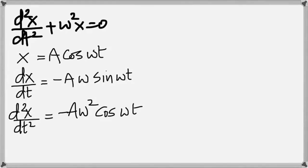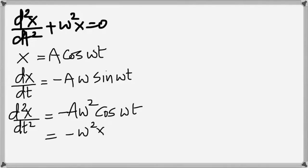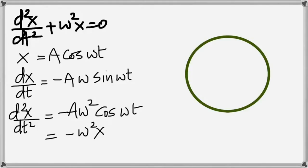Do you see A cos(ωt) in that result? That's nothing but X. So we can write d²X/dt² = −ω²X. This proves that if you assume the solution X = A cos(ωt), you get back to the differential equation you started with — which should make a lot of sense.